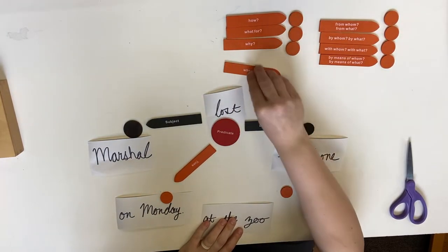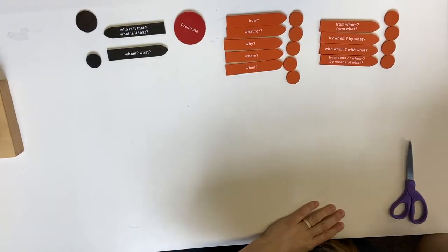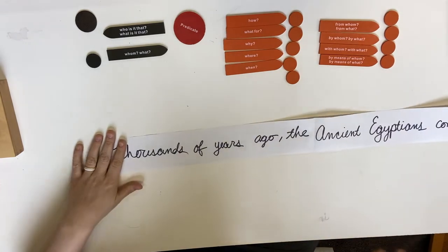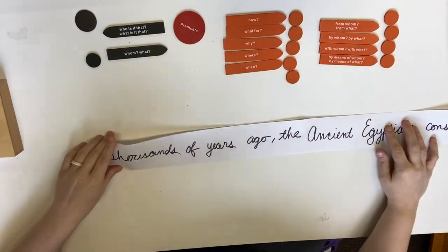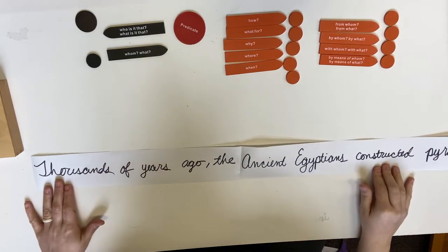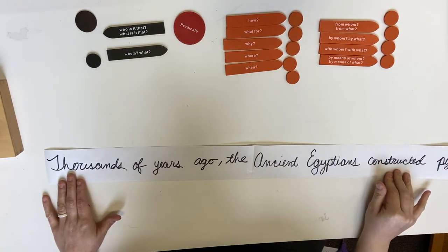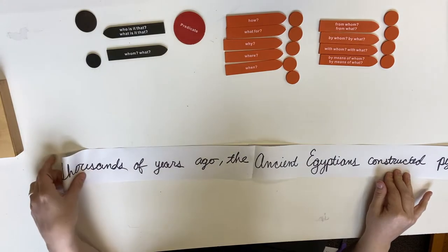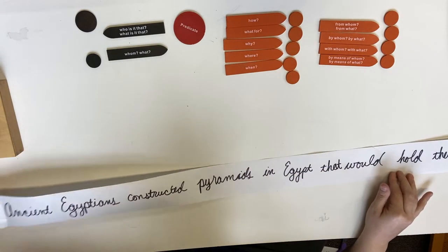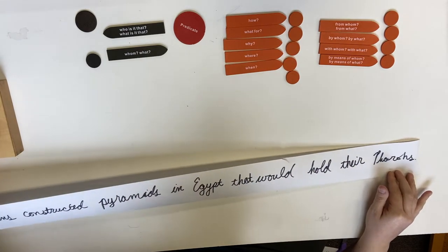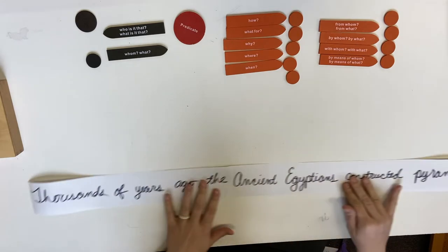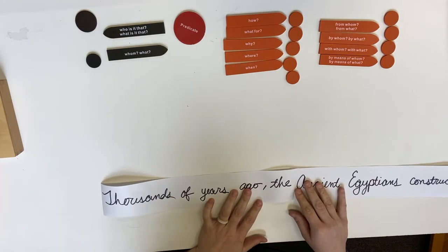All right, let's do another one. This sentence is long — I don't think I'm going to be able to fit it on camera. Are you ready? I'm super excited about it. Here we go: 'Thousands of years ago, the ancient Egyptians constructed pyramids in Egypt that would hold their pharaohs.' Whoa. That's a long sentence — I find it extremely exciting.